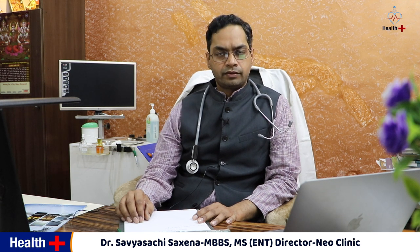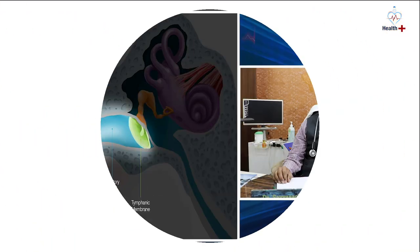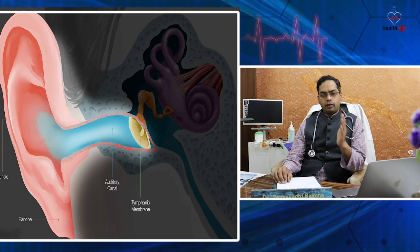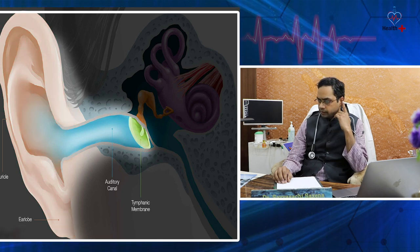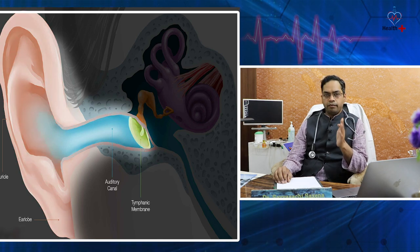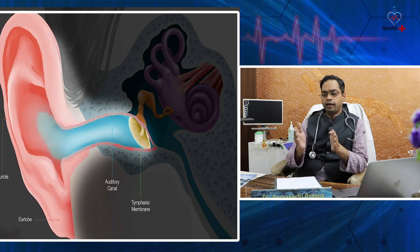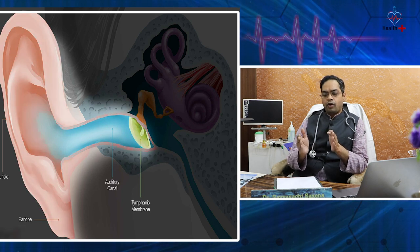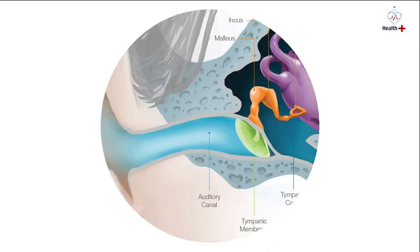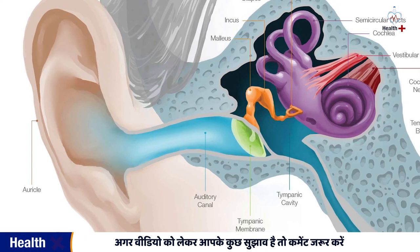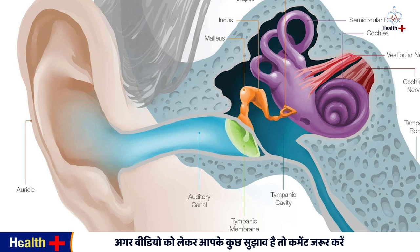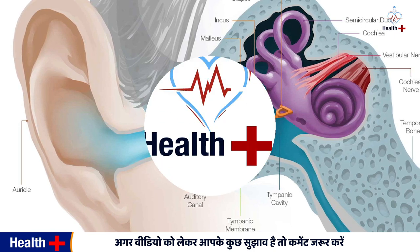Our ear has three parts: the outer ear, the middle ear which includes the ear drum, and the inner ear, which is involved in hearing. The inner ear is basically a part of your brain.